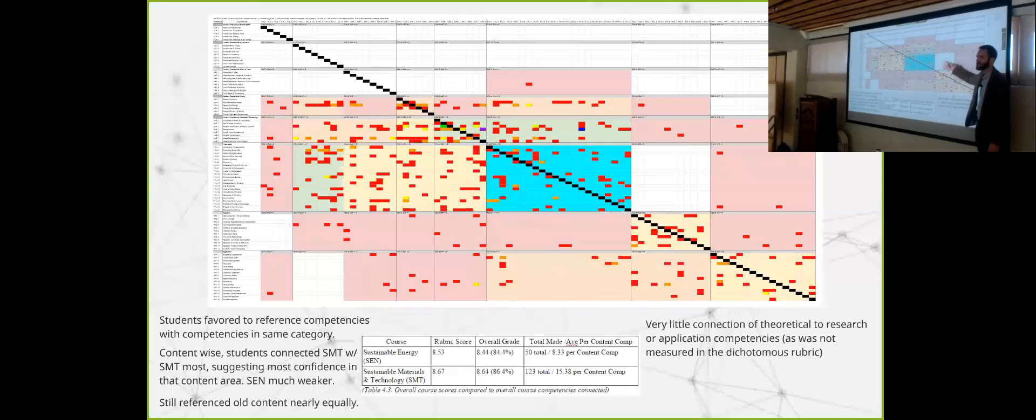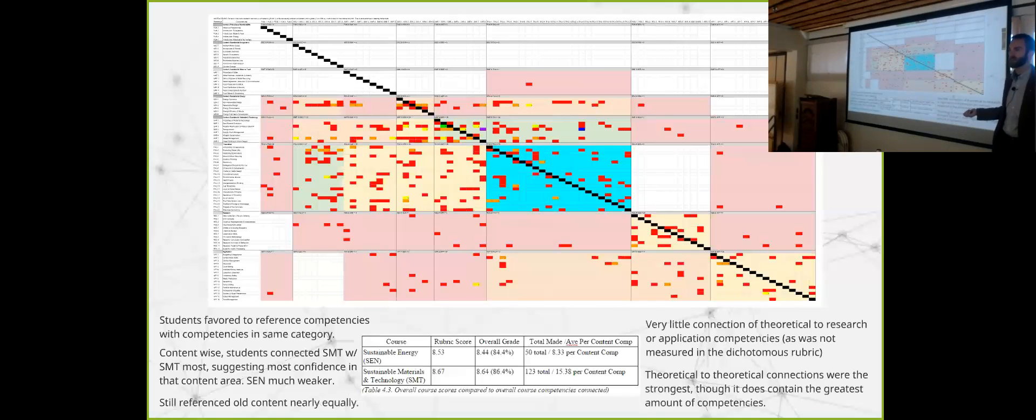Very little connection of theoretical to research, so that's kind of this black hole of connectivity up here. But I noticed that that was not measured on the rubric. I didn't design the dichotomous rubric that way. And that's a design flaw on my part. So that's something I would go back to the rubric and tweak to put more emphasis on connectivity to those two other content competencies, those connections. And theoretical was the strongest, hence why it's blue. I used a ROYGBIV construct in ROYGBIV, the color spectrum. Basically, if it's red, very low. Once we get into the green, blue, indigo, violet, that's when the hyper-connectivity starts to happen.